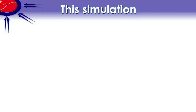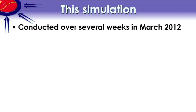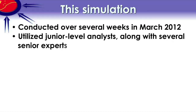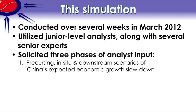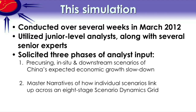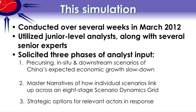In terms of this simulation, it was conducted in March of 2012 over several weeks. It involved junior-level analysts along with several senior experts. We solicited three phases of inputs. First, we asked them to brainstorm scenarios of China's expected growth slowdown — precursing scenarios leading up to the slowdown, in situ ones describing the slowdown itself, and downstream scenarios describing the aftermath or the results of that slowdown. We then asked them to put together master narratives, linking together individual scenarios across an eight-stage scenario dynamics grid. Finally, we asked them to come up with strategic options for relevant actors in response to all these different scenarios.